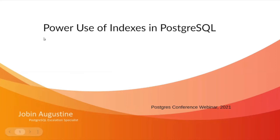A little bit about your speaker. Joven is a PostgreSQL expert and open source advocate who has more than 18 years of working experience as consultant, architect, administrator, writer, and trainer in PostgreSQL, Oracle, and other database technologies. He's always been an active participant in the open source communities, and his main focus area is database performance and optimization. Joven holds a master's in computer applications and joined Percona in 2018.